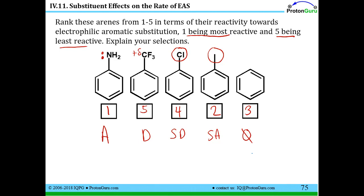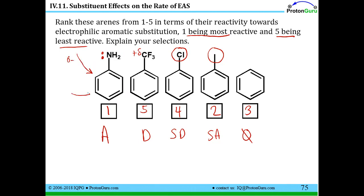In our next lesson, we'll talk not only about the rate of electrophilic aromatic substitution, but also about regiochemistry — specifically, if a compound already has a substituent and undergoes EAS, whether the next substituent goes to the ortho, meta, or para position to give the major product.